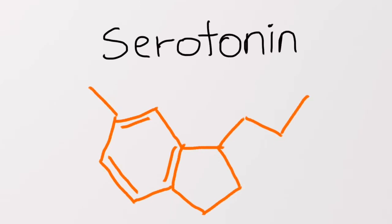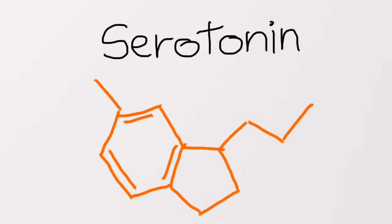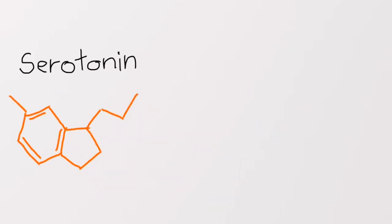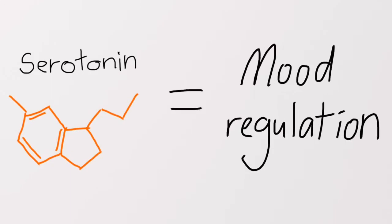One of these is a neurotransmitter, or signaling molecule, called serotonin. Serotonin helps regulate our moods, and low levels of serotonin can result in anxiety, insomnia, and obsessive behavior.